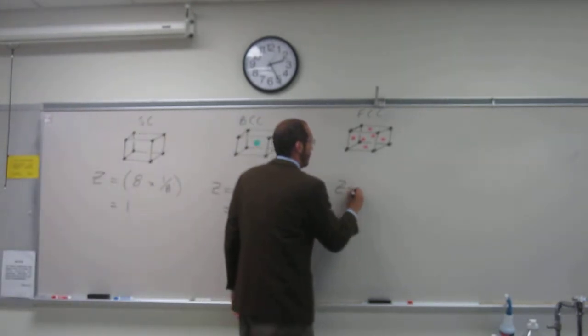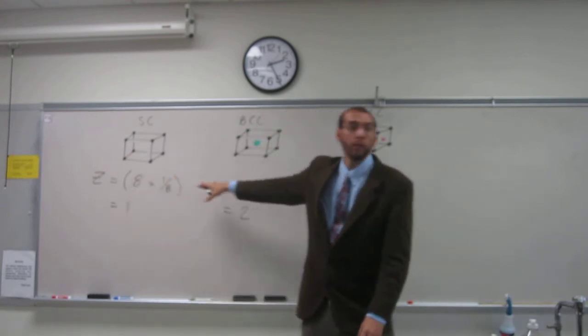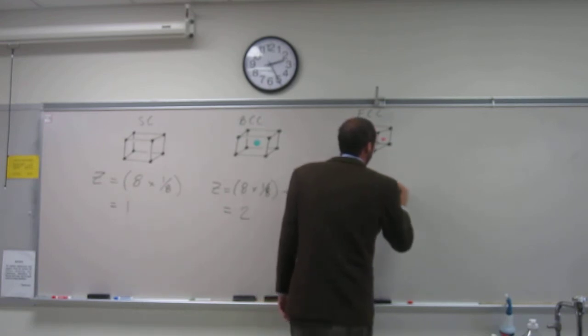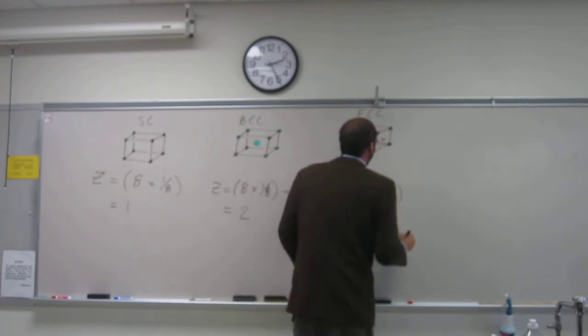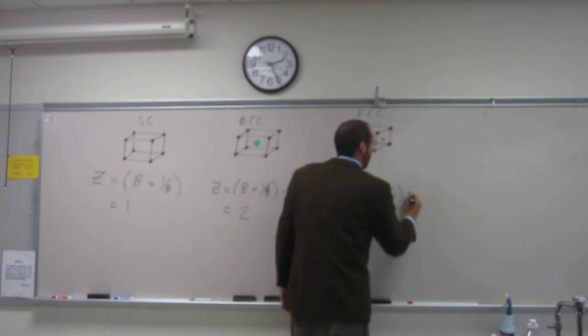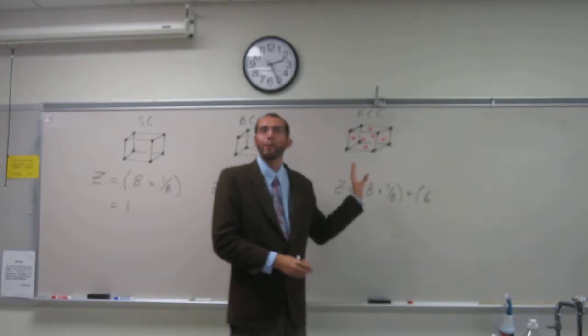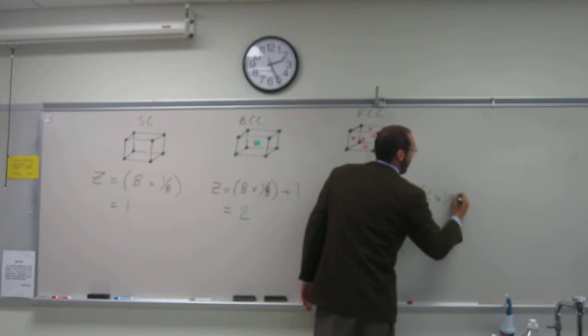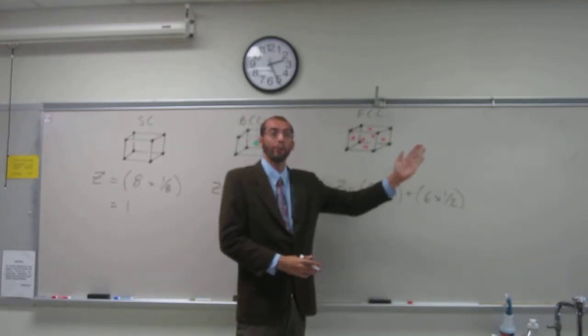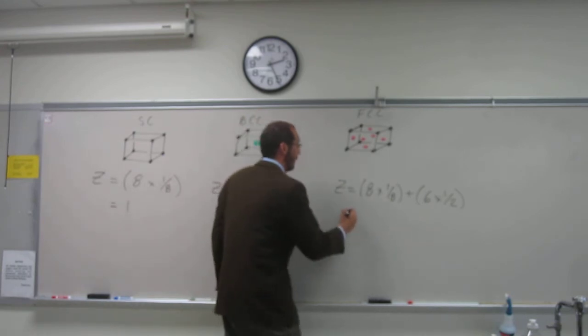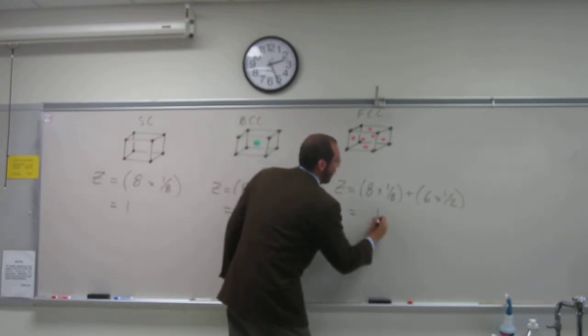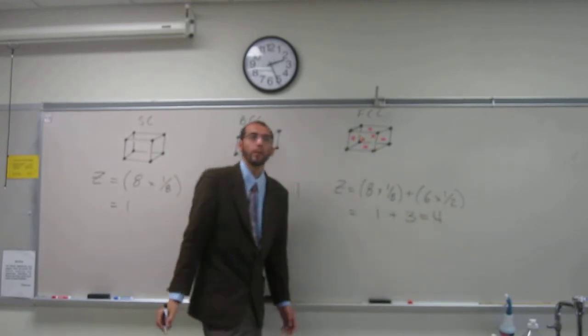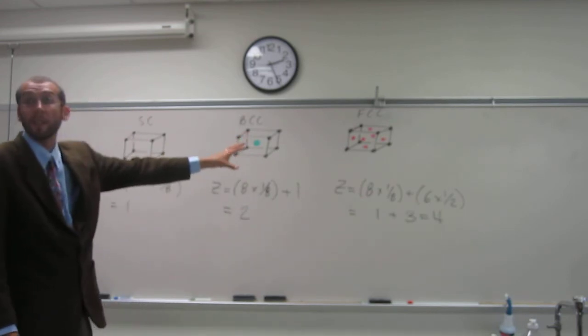For the face-centered cubic, we start with eight times one-eighth for the corners. Now we add something—the six face atoms. How much of each face atom is inside? Half of it, because they're all cut in half by the sides of the cell. So that's one plus six times one-half, which equals one plus three, giving us Z equals four. The number of lattice points for FCC is always four.